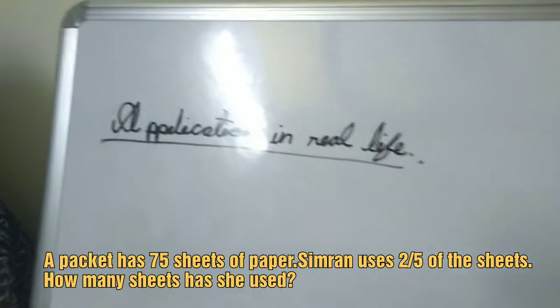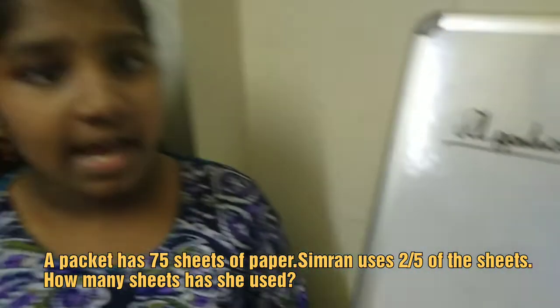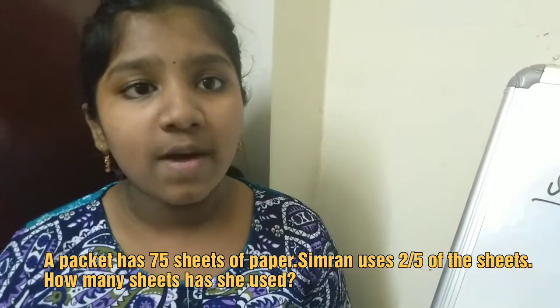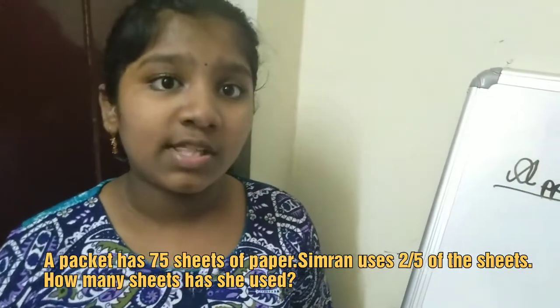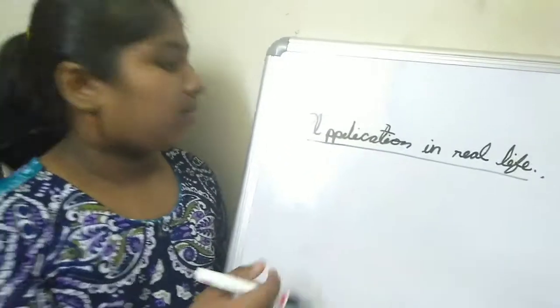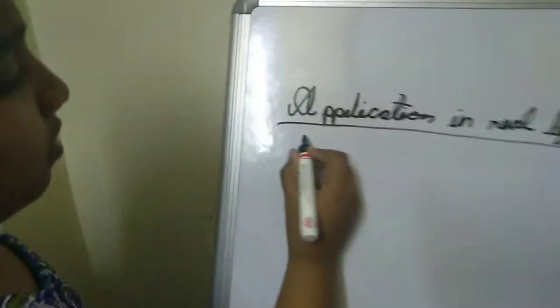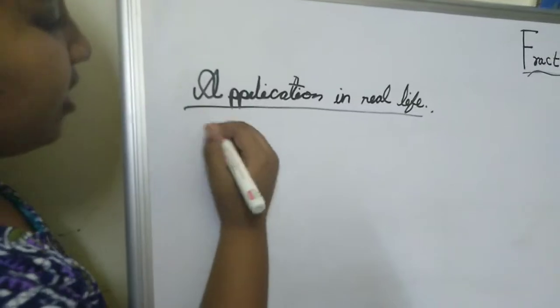So friends, now we will go to application in real life. The first question is: a packet has 75 sheets. Simran uses 2 by 5 of the sheets. How many sheets has she used?